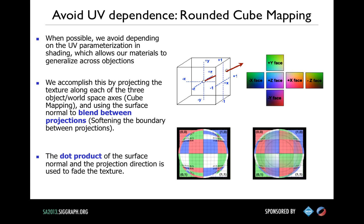At Pixar, particularly with set shading, we like to avoid dependence on UVs. That allows us to generalize shaders from object to object, because it's based on the shape rather than the UVs. One way we do that is rounded cube mapping — projecting your texture onto the object along three axes and using the dot product of the normal on one of those axes to blend between the textures. It's like a cube map, but you blend along the edges. Since it's based on the shape of the object, you can move shaders from object to object, which is very beneficial when shading lots of stuff.